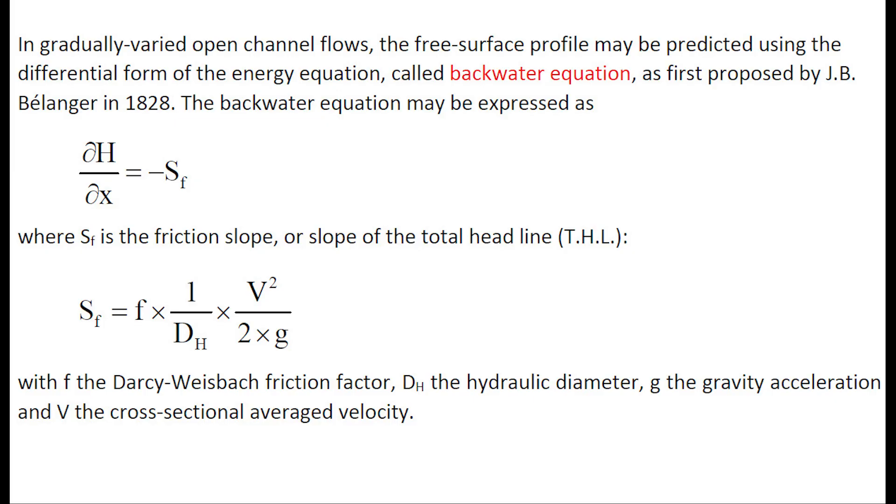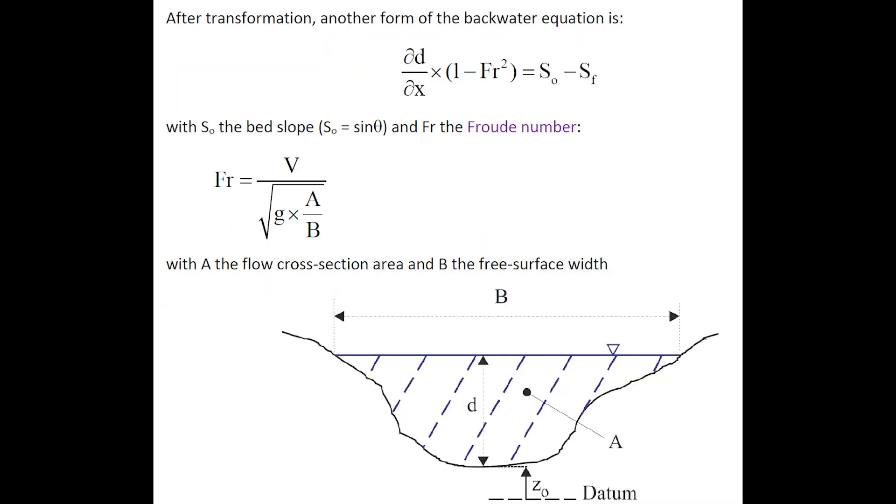In gradually varied open channel flow, the longitudinal free surface profile may be predicted using the differential form of the energy equation called backwater equation, as first proposed by Bélanger in 1828. Its expression is shown here, where Sf is the friction slope or slope of the total head line.